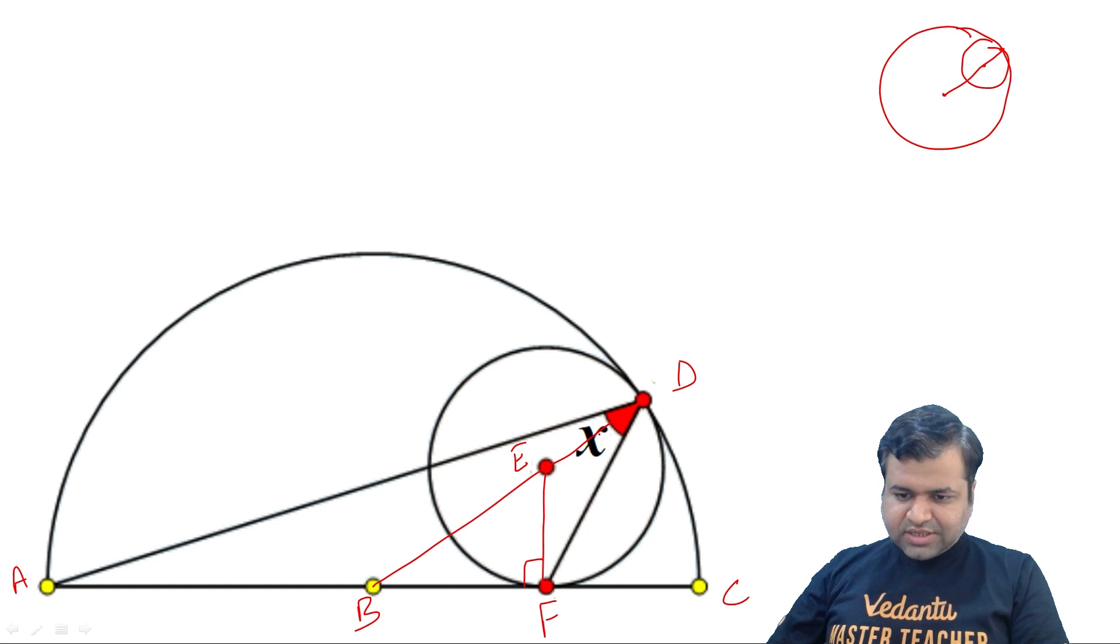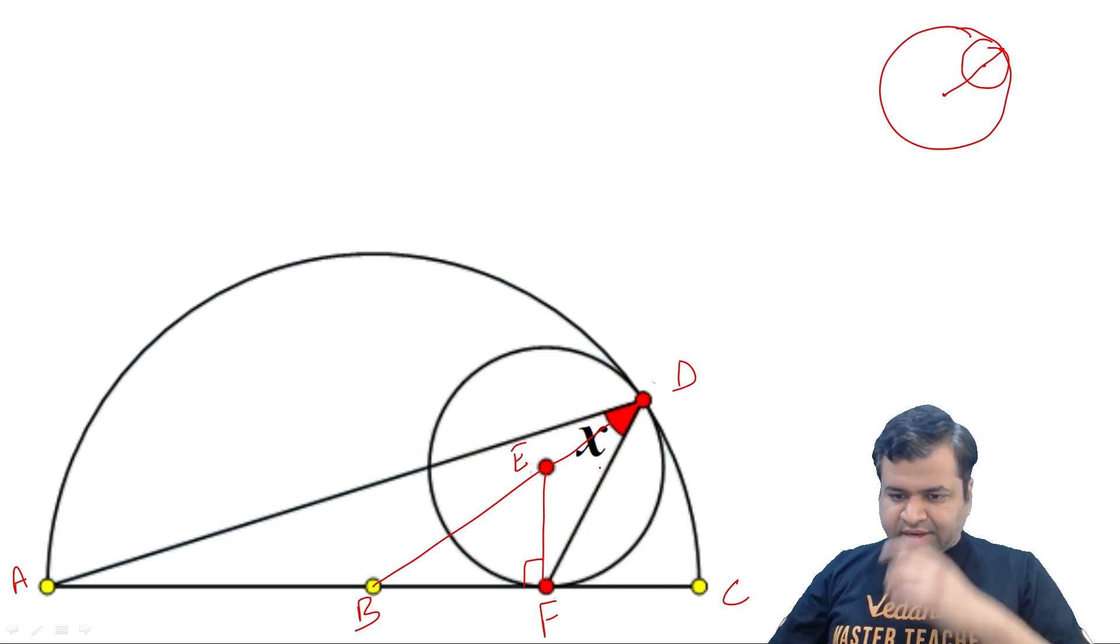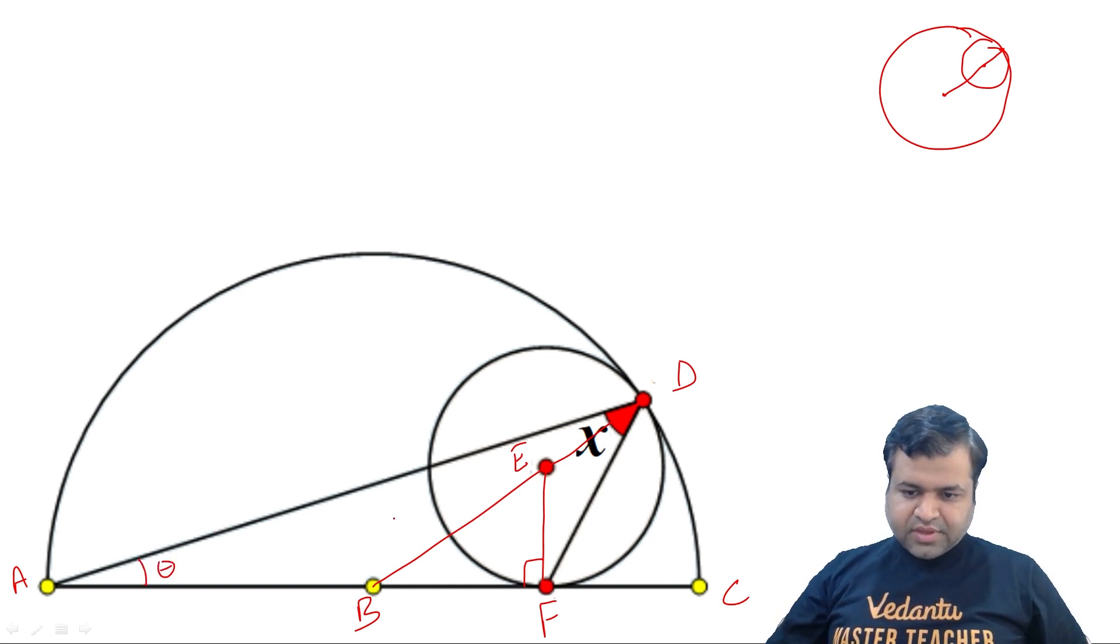So let's find the angles. We are interested in angle x. Let's assume this is angle theta. So clearly this is angle x. This is exterior angle, which should be equal to interior opposite. So this should be equal to theta plus x.